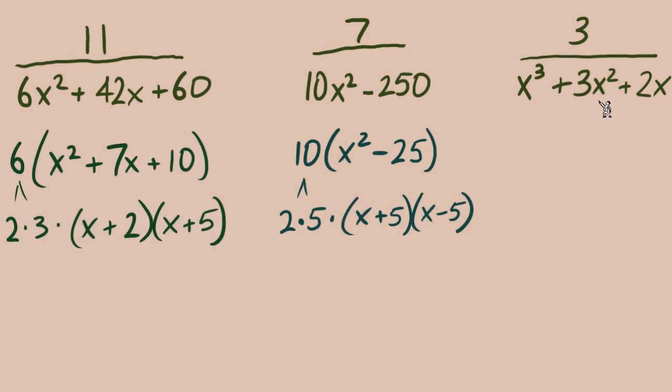How about this last denominator, x cubed plus 3x squared plus 2x? There's a GCF here. It's not a number, but each of these terms does have an x that we can divide out, leaving us with x squared plus 3x plus 2. Can we factor that trinomial further? We can, x plus 2 times x plus 1. Our first move is factor every denominator.